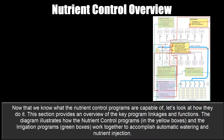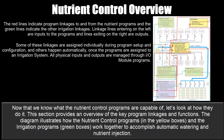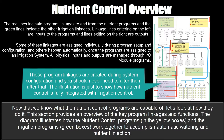Now that we know what the nutrient control programs are capable of, let's look at how they do it. This section provides an overview of the key program linkages and functions. The diagram illustrates how the nutrient control programs — shown in yellow boxes — and the irrigation programs — shown in green boxes — work together for automatic watering and nutrient injection. Red lines indicate program linkages to and from the nutrient programs; green lines indicate other irrigation linkages. Linkage lines entering from the left are inputs and lines exiting on the right are outputs. Some linkages are assigned individually during program setup, while others happen automatically once programs are assigned to an irrigation system. All physical inputs and outputs are managed through IO module programs, with linkages created during system configuration.